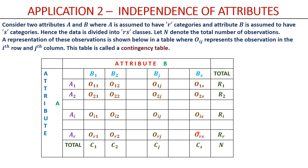When we add up the rows and columns, we get the row totals R1, etc., Rr (since we have r rows), and the column totals C1, C2, etc., Cs (since we have s columns). The total of all the row sums and column sums should match, giving us the total number of observations — capital N is the total sum. This type of table is called a contingency table, which explicitly defines the attributes, the observed values, the row totals, the column totals, and thereby the overall sum total.